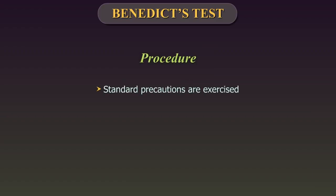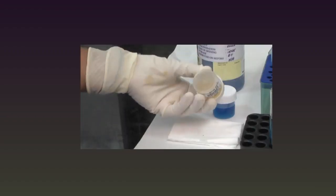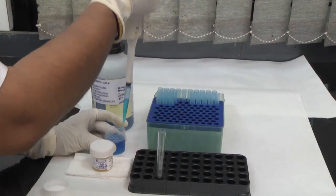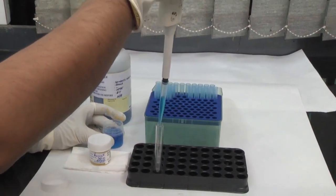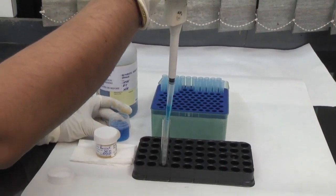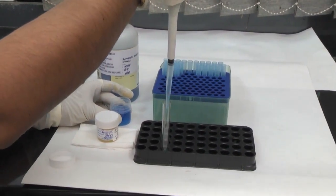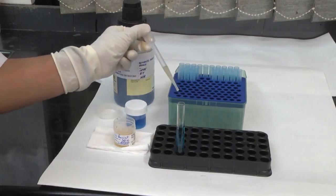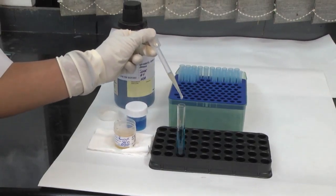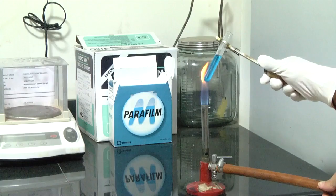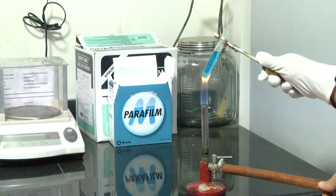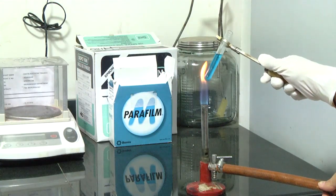Procedure: Standard precautions need to be exercised. Mix the urine sample well. Take 5 ml of Benedict solution in a test tube. Add 8 drops of urine to the Benedict solution. Bring to boil and observe the colour change.